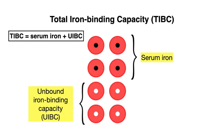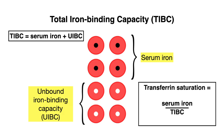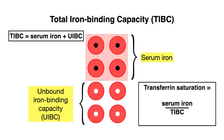If we wanted to calculate all of the transferrin that is actually saturated with iron, we would use a different formula: you take the serum iron and divide it by the total iron binding capacity. So the TIBC and transferrin are essentially different measures of the same parameter, but TIBC gives you a measure of all available iron binding sites in circulation, while transferrin saturation reflects only the transferrin molecules actually saturated with iron.